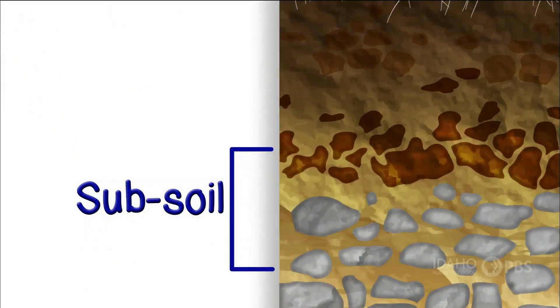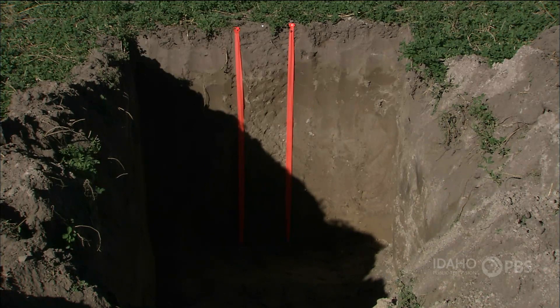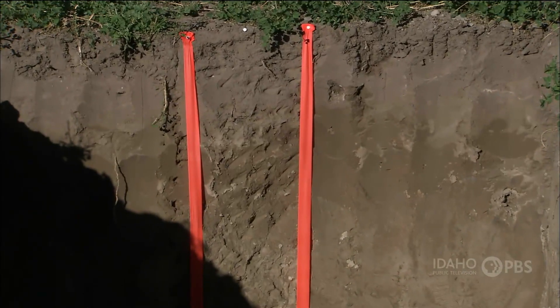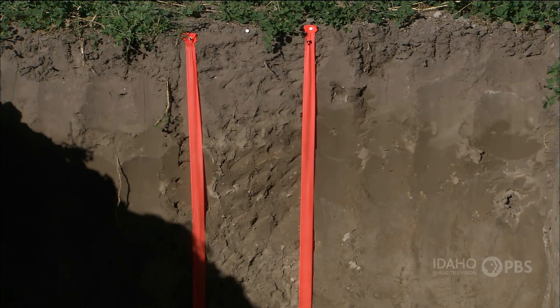Under topsoil is subsoil. It's from several inches to several feet thick. It looks lighter because it contains less humus, is more tightly packed, and has slightly bigger pieces of rock.